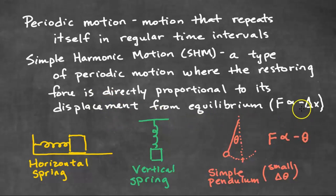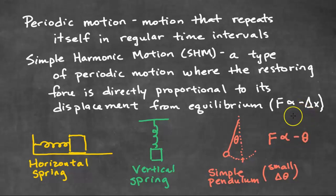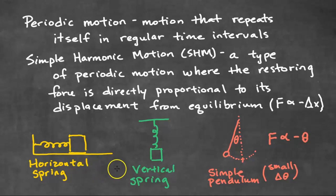You'll notice a negative sign here because the restoring force and the displacement will be in opposite directions. Examples of simple harmonic motion include horizontal springs, vertical springs, and simple pendulums.